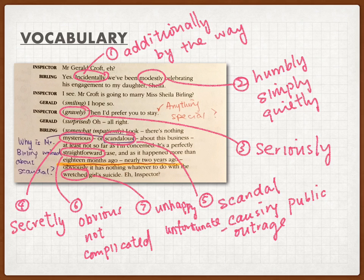Number six, 'straightforward' — it means not complicated at all, very obvious. And number seven, the last one, 'wretched' — it means unhappy, unfortunate. So 'the wretched girl' means the girl was very unhappy and she was a very unfortunate, unlucky girl.